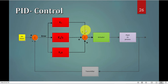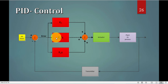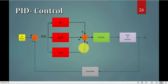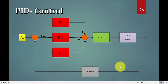If I add this result with the integration of the error — the area under the curve of the error — and multiply it by a gain, this is the integration part of the controller. If I take the rate of change of the error multiplied by a gain, this is the D part of a PID. I add all of those and give it to my actuator.